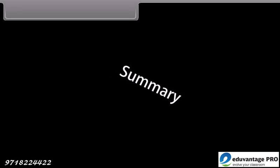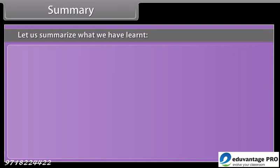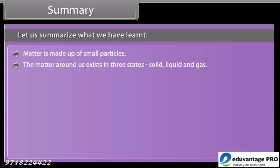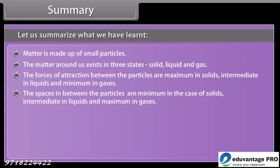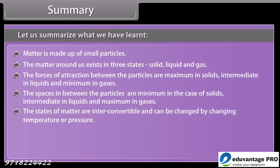Summary. Matter is made up of small particles. The matter around us exists in three states: solid, liquid and gas. The forces of attraction between the particles are maximum in solids, intermediate in liquids and minimum in gases. The spaces between the particles are minimum in solids, intermediate in liquids and maximum in gases. The states of matter are interconvertible and can be changed by changing temperature and pressure.